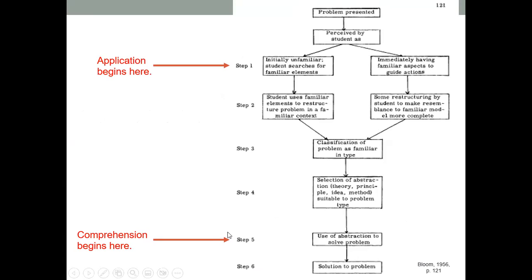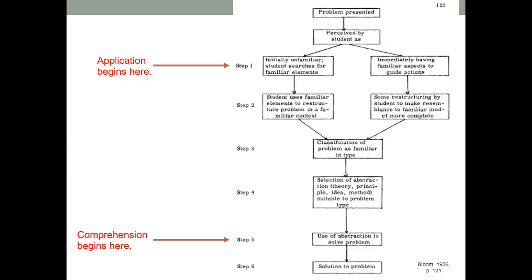If you're at the comprehension level, you're starting at step five — an abstraction is given to you and you use it to solve the problem. In application, the problem is given and then the student says, 'This isn't something I've seen before, it's unfamiliar to me,' or they need to think about what to do. The student begins at step one, applying previous knowledge and prior schema to reach a conclusion. Whereas with comprehension, you're more or less still spoon-feeding them.